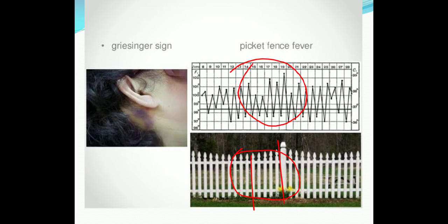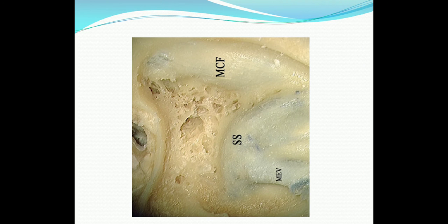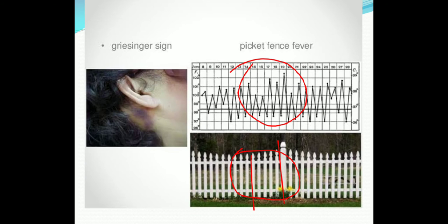Regarding signs: the sigmoid sinus continues with the mastoid emissary vein. When a thrombus occludes the mastoid emissary vein, it causes engorgement of the superficial veins and may present as edema over the posterior part of the mastoid side. That is Grissinger's sign.